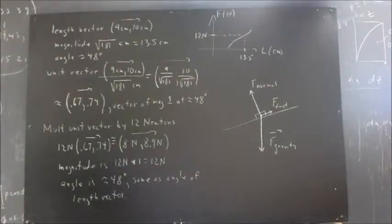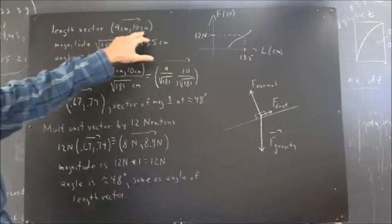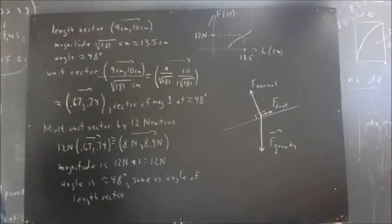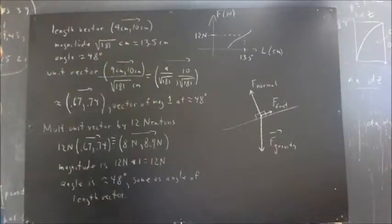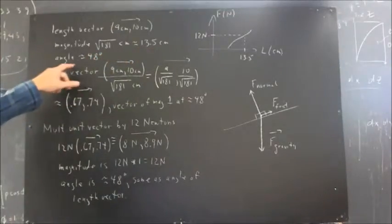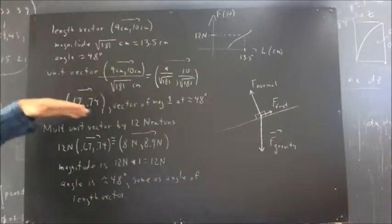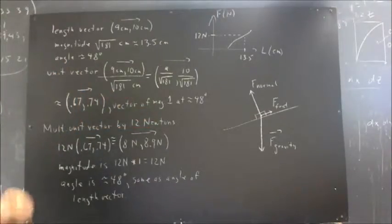Okay, our length vector, 9 centimeters, 10 centimeters, thus has magnitude squared of 181 centimeters, approximately 13.5 centimeters, makes angle 48 degrees measured counterclockwise from the positive x direction.